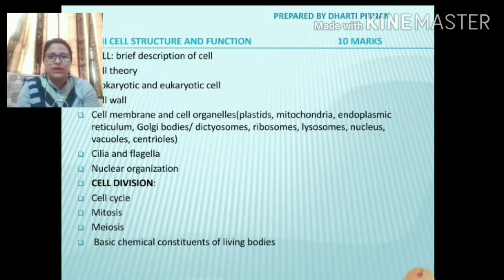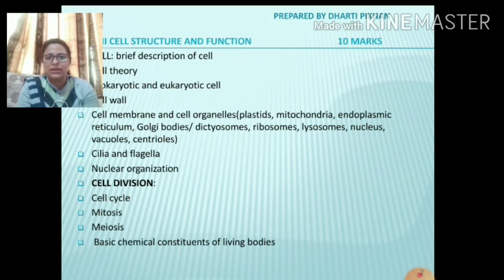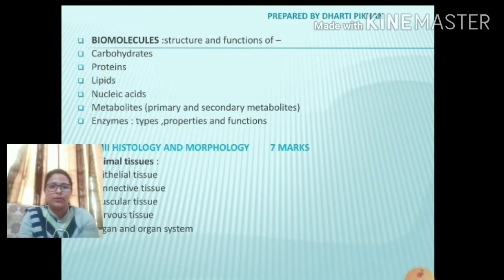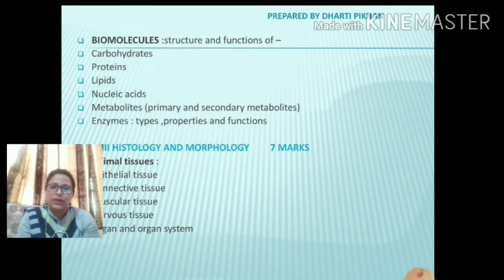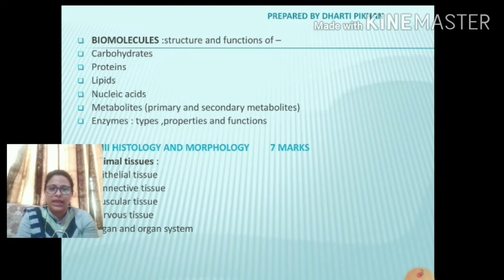Then we have cell division, which is very important and knowledgeable. It includes the cell cycle, mitosis, and meiosis — mitosis and meiosis are the most important. Then the next one is the basic chemical constituents of living organisms, where we look at biomolecules including carbohydrates, proteins, lipids, nucleic acids, and metabolites — both primary and secondary. The last one is enzymes: their types, properties, functions, applications, theories — all detail related to enzymes we have to cover.